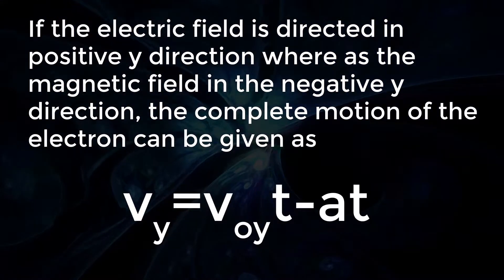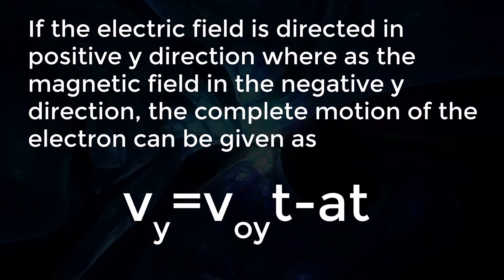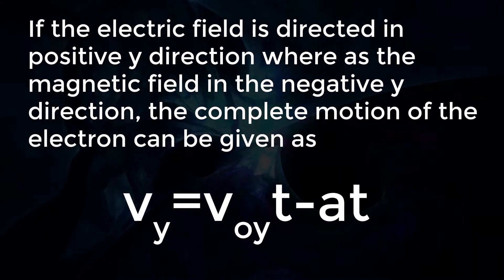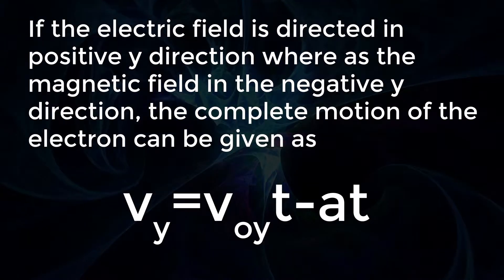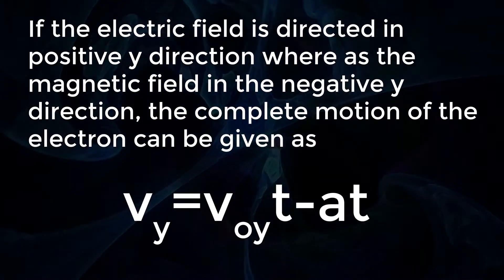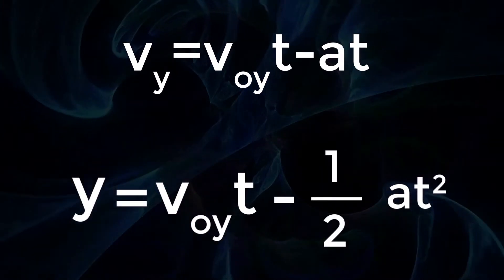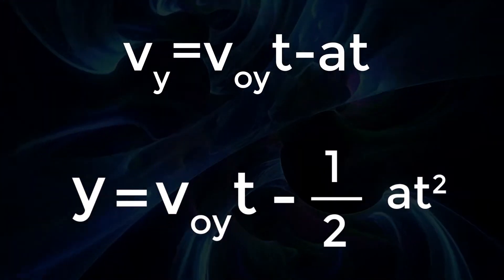The complete motion of the electron can be given as: Vy equals V zero y into t minus at, y equals V zero y into t minus half a t squared.